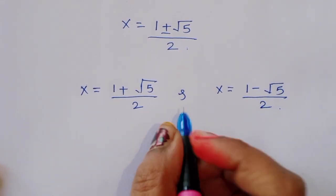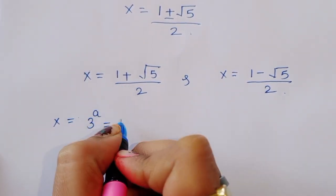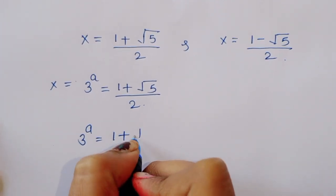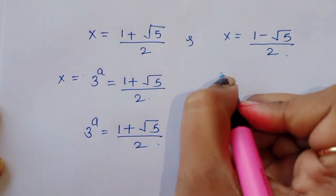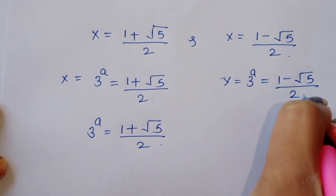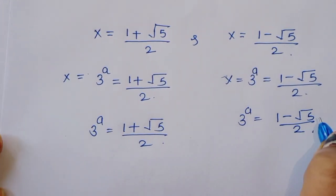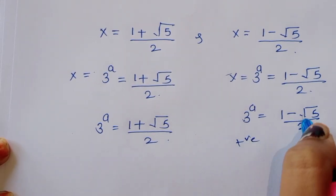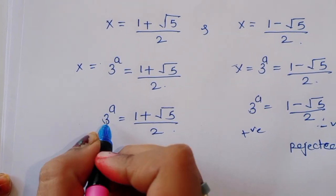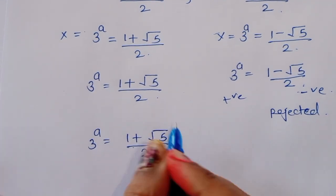We know that x is equal to 3 power a. So 3 power a is equal to 1 plus square root of 5 divided by 2, or 3 power a is equal to 1 minus square root of 5 divided by 2. The second value is negative, so it is rejected. We are left with 3 power a is equal to 1 plus square root of 5 divided by 2. Now taking log on both sides.